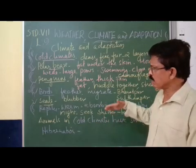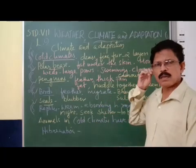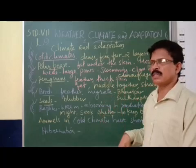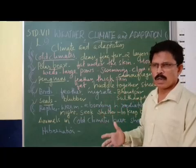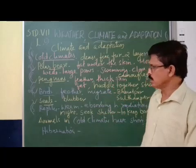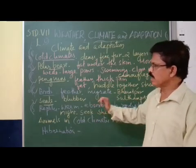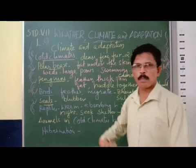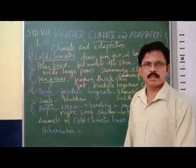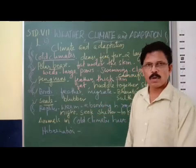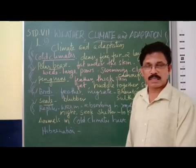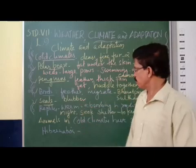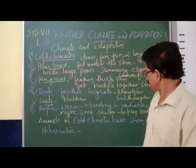When the climate in Siberia is normal, they go back. Another important feature of sea animals is the large blubber — fat deposition — under the skin. This blubber acts as a very good insulator.